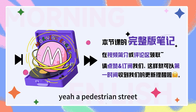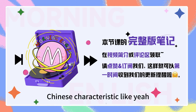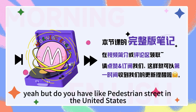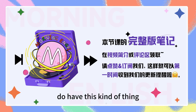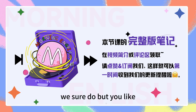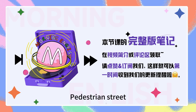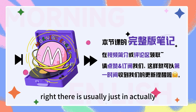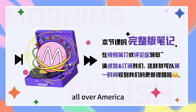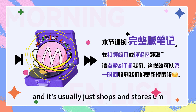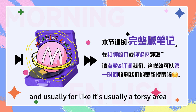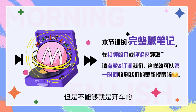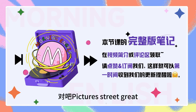最后一个要给大家讲到的就是，每一个城市在中国都会有一条叫做步行街，对吧？Yeah, a pedestrian street. 这个是中国特色吗？Well, there are a lot of walking streets in China. But do you have pedestrian streets in the United States? We sure do. For example, Times Square, that's like a pedestrian street. 所以people are not allowed to drive there, right? Right. It's usually just shops and stores, and usually a touristy area. 所以就是有非常多的行人在上面走来走去，但是不能开车的，然后有很多商店的这样的街，对吧？Exactly. Pedestrian street.